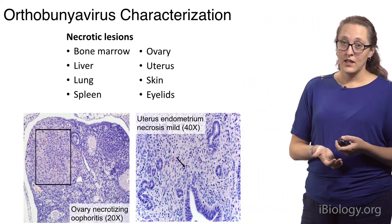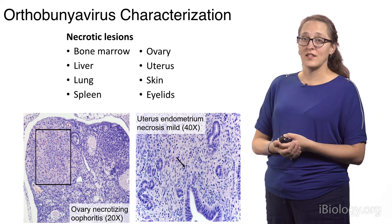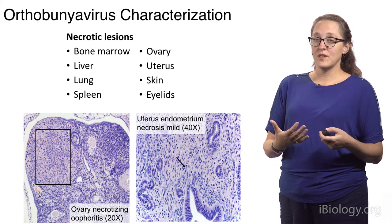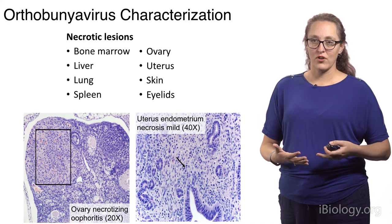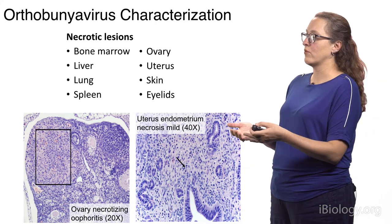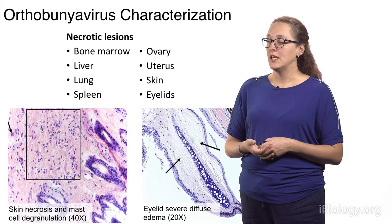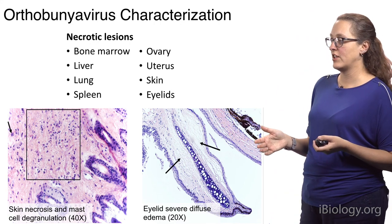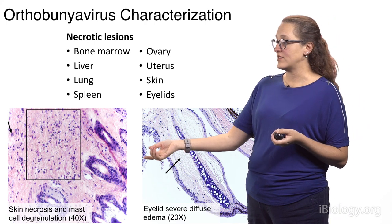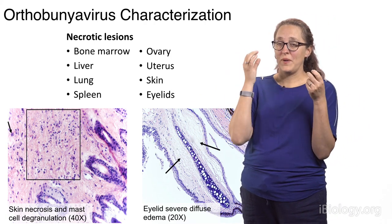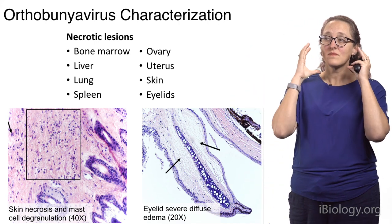We also looked at the pathology of these mice. We found necrotizing oophoritis in the ovary, and we also had some necrosis in the uterus. This is interesting because the manifestations of bunyamwera in cattle tend to be abortions — affecting the reproductive tract. Finding these reproductive tract-associated lesions is a potential use for this mouse model. We also saw skin necrosis, a lot of mast cell degranulation — meaning a lot of inflammation in the skin — and diffuse edema in the eyelids, where the space between cells is filled with fluid.